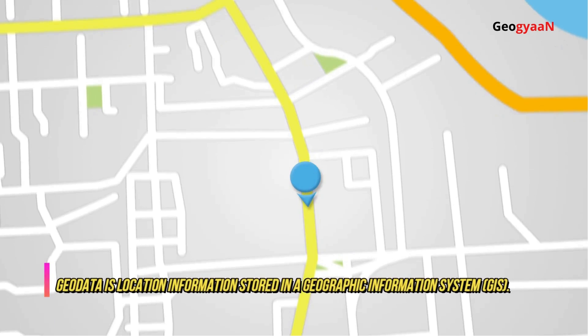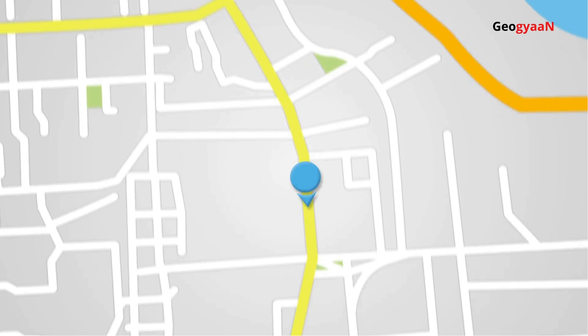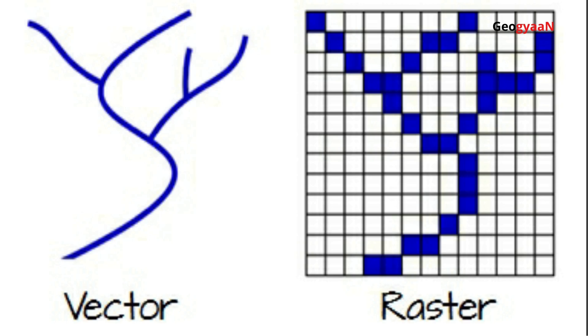Types of Geographic Data. As it turns out, there's not one single type of Geodata. Instead, Geodata exists in various forms. For example, we commonly use vector and raster to depict Geodata.